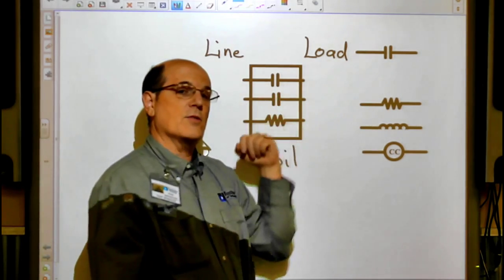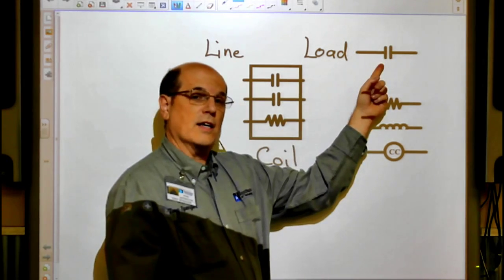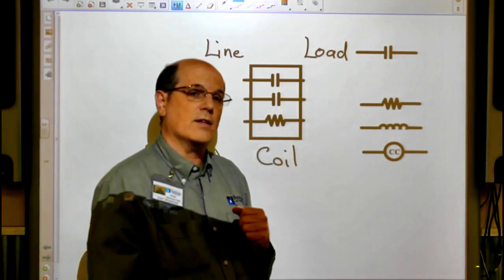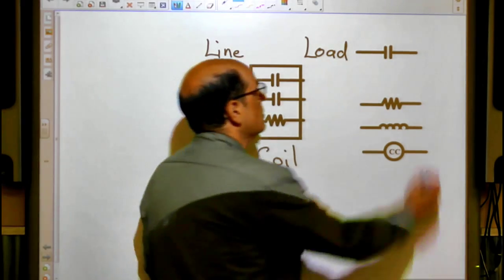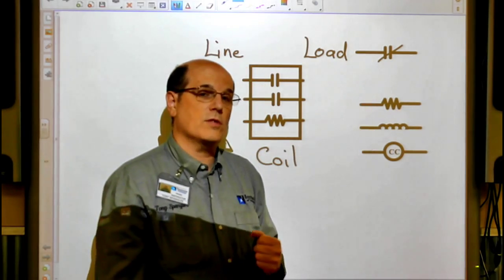Inside of this contactor we see two contacts. This is the symbol for a contact. This is a normally open contact. When we energize it, it's going to close. That's the symbol for a closed contact.